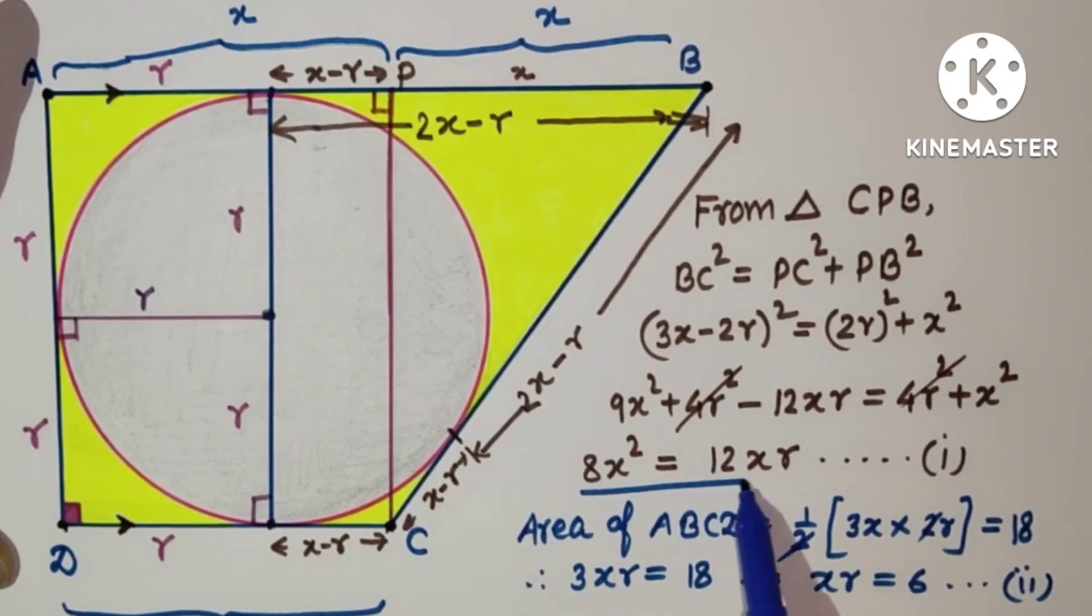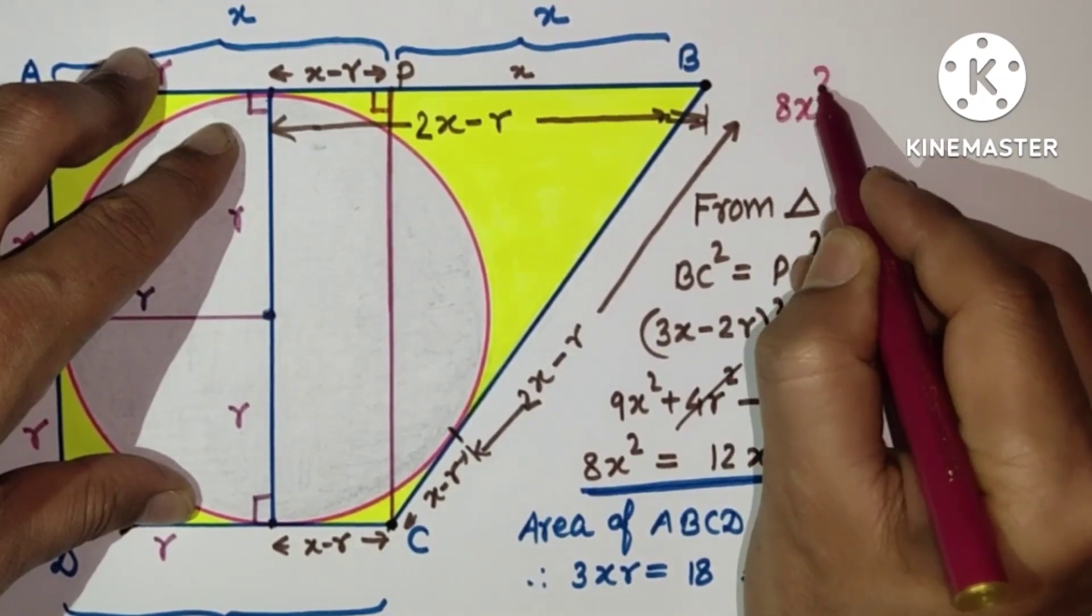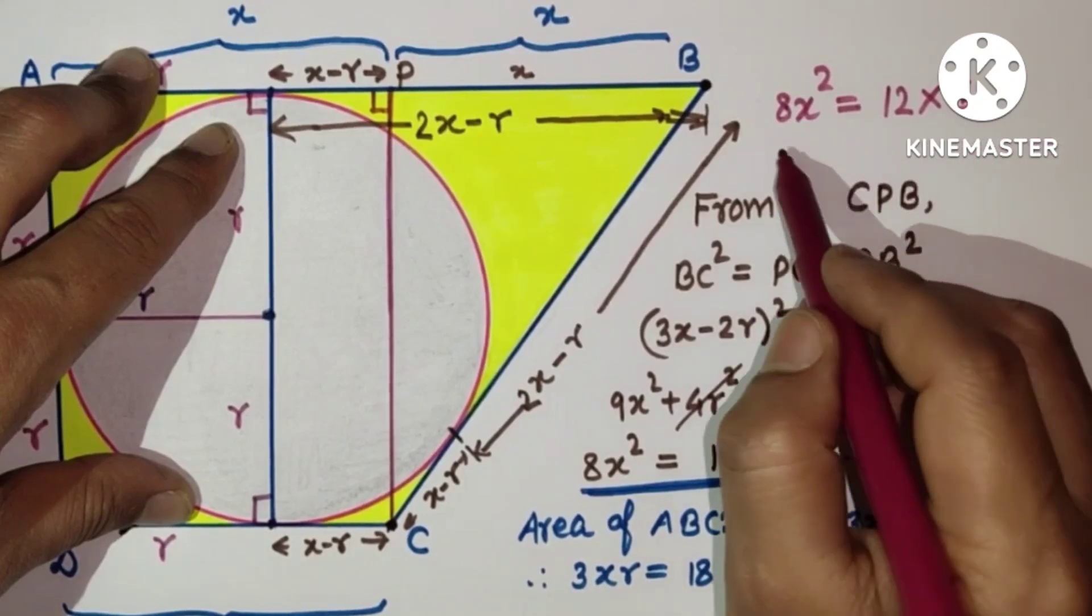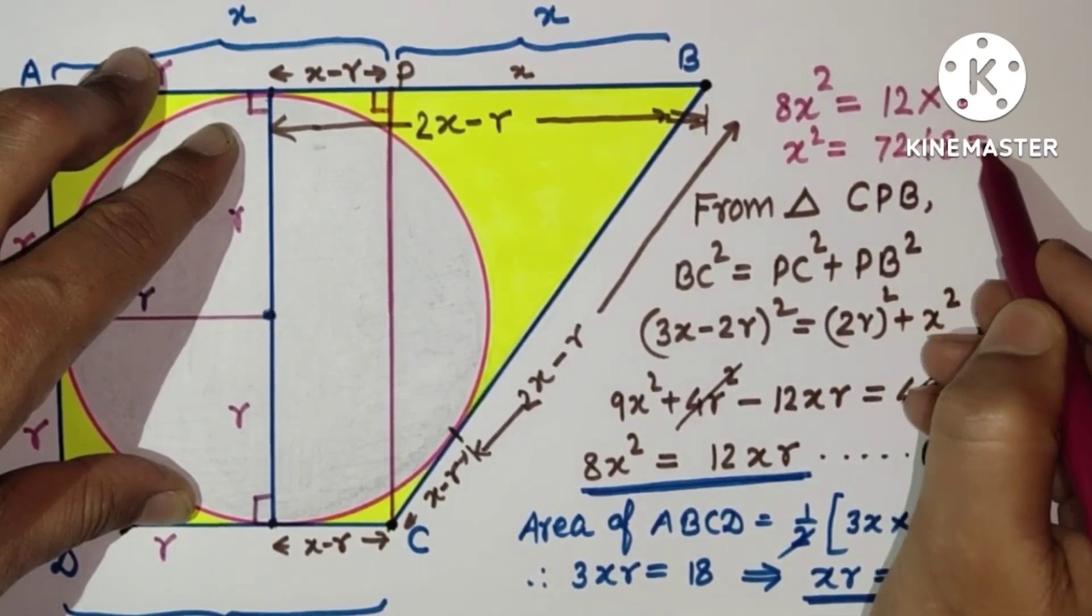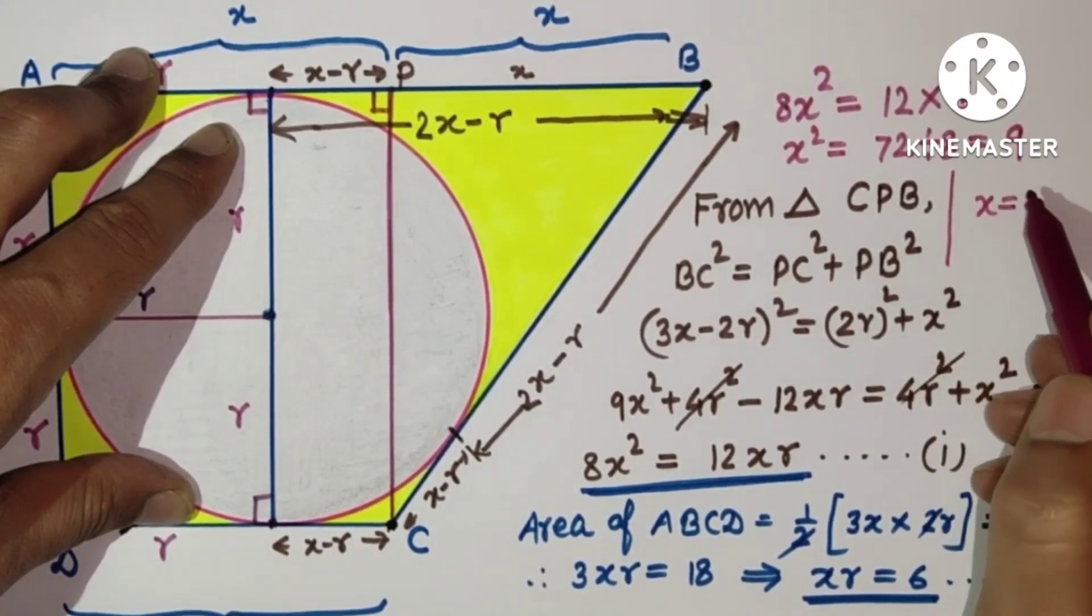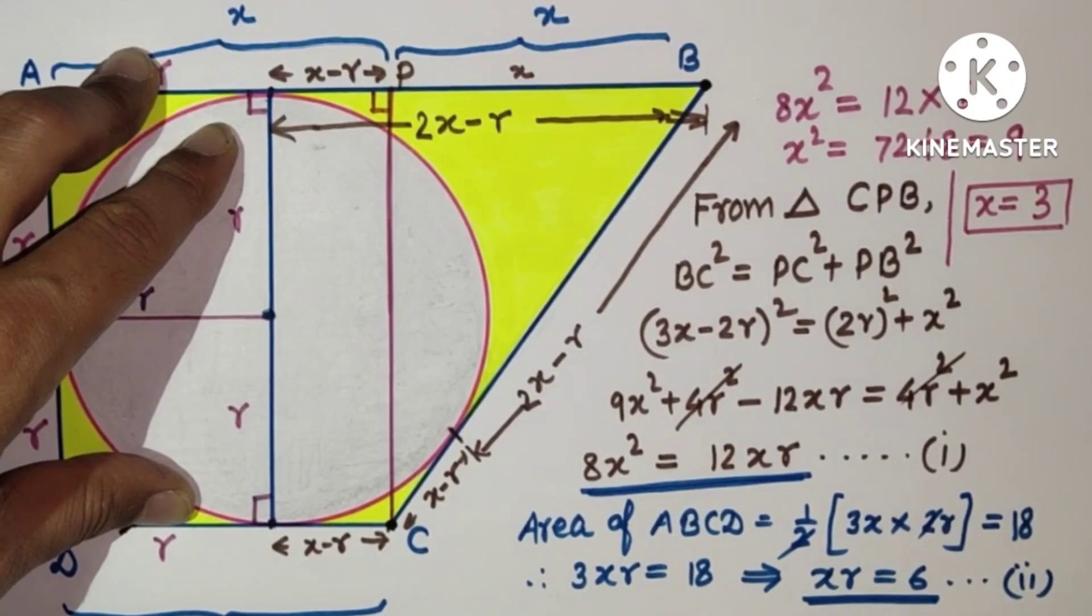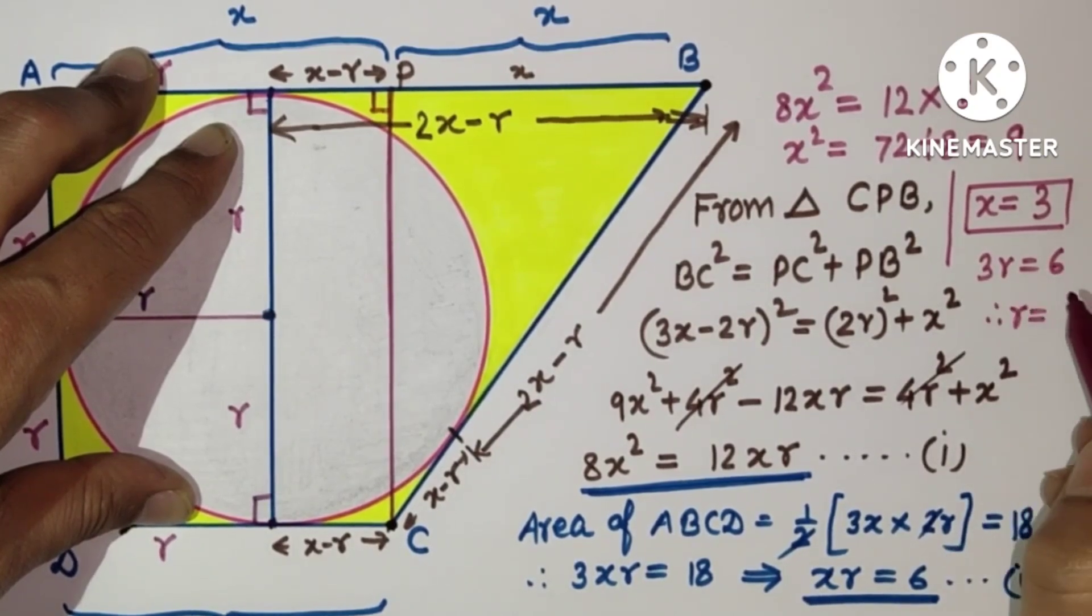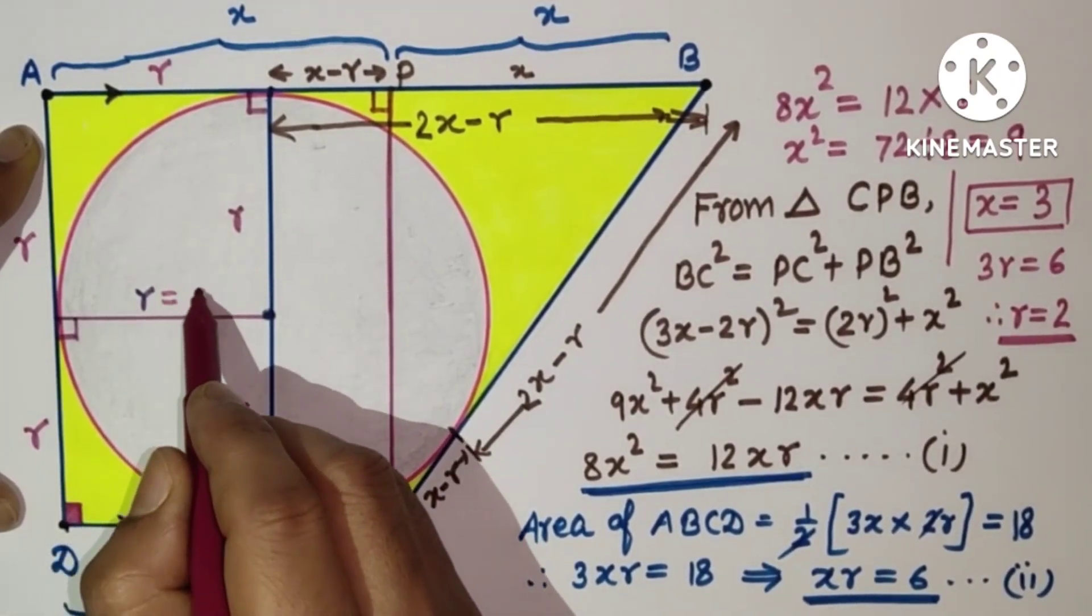So we had 8X square as 12XR, first result, and XR is 6. Substituting XR is 6 here, so we are getting 8X square is equal to 12XR is 6, so which is X square is equal to 12XR is 72, divided by 8, which is 9. So therefore we are getting X as plus minus 3, so minus 3 will be rejected, only 3. So if X is 3, then XR here is 6, so 3R is equal to 6, and therefore, R is equal to 6 by 3, which is 2 units, 2 cm. Hence the radius of the circle will be 2 cm, and that is the answer.